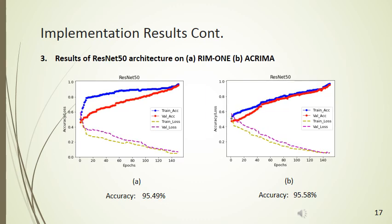The last architecture, ResNet-50, attained accuracy of 95.49% on RIM1 and 95.58% on ACRIMA datasets. Those diagrams show good results and the model works well on both training and testing data.